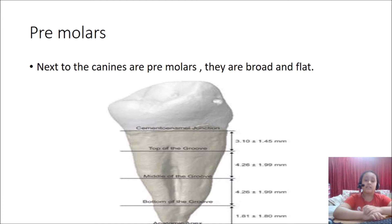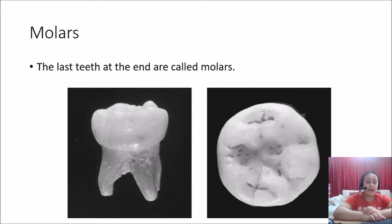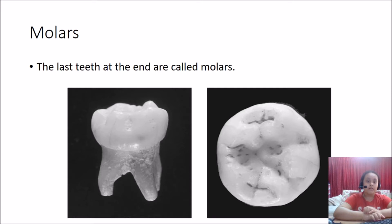The last teeth are molars. There are six molars in each jaw — six in the upper jaw and six in the lower jaw — so there are 12 molars in total. They grind the food into very small pieces so we can digest it. They are very sharp on top, and because they grind the food, they are called grinding teeth. Fun fact: the last molars are called wisdom teeth.